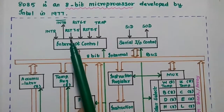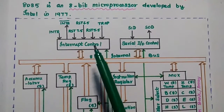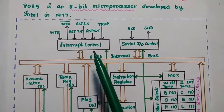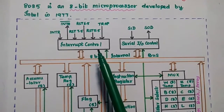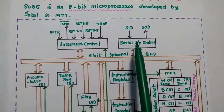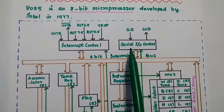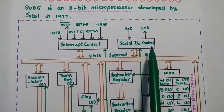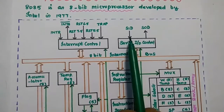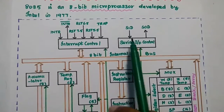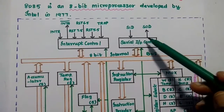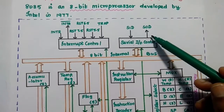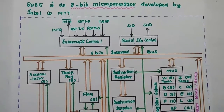We have already discussed the signals in detail in the previous lecture on the pin diagram. The next unit is serial input-output control, which controls serial data communication. There are two signals: SID, meaning serial input data, and SOD, meaning serial output data.